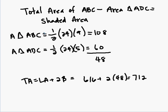So here I have the area of ABC, the larger triangle, is one half. Remember we said x was 12, so the base is 24, times the height of 5, which was y, plus 4 is 9. And that equals 108.